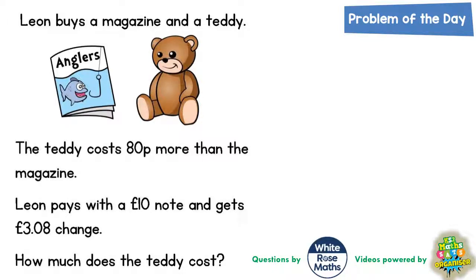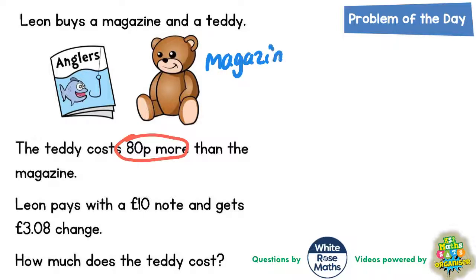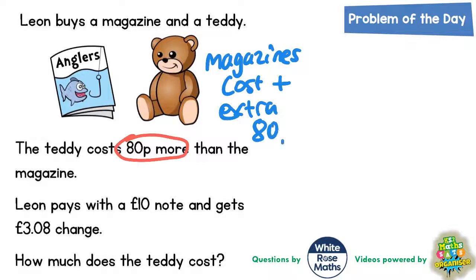Welcome problem solving fans to another problem of the day - this one's all about a magazine and a teddy. Leon is going to buy a magazine and a teddy, but the teddy costs 80p more than the magazine. Another way of saying that is the teddy's cost is the same as the magazine's cost plus an extra 80p, and that is equal to the teddy's cost.